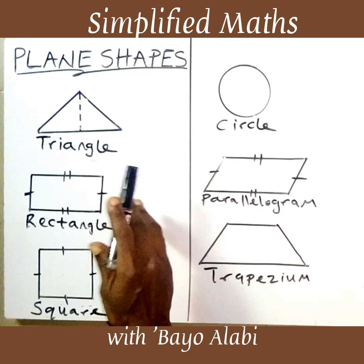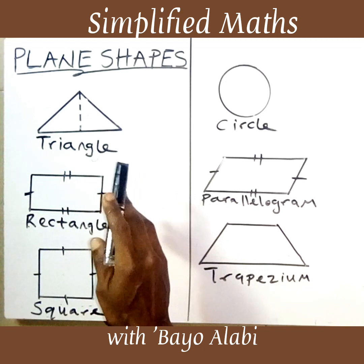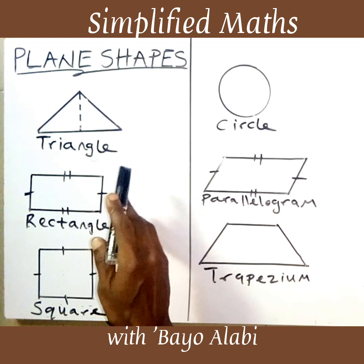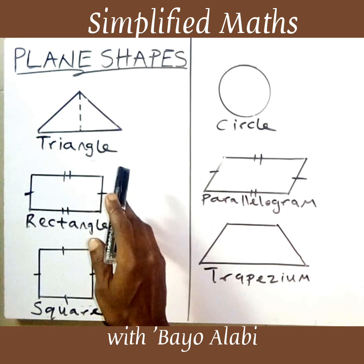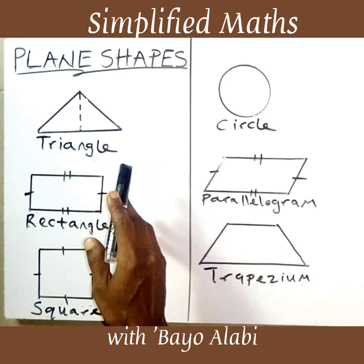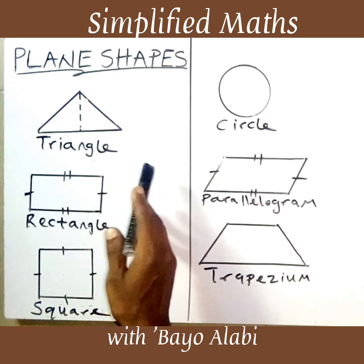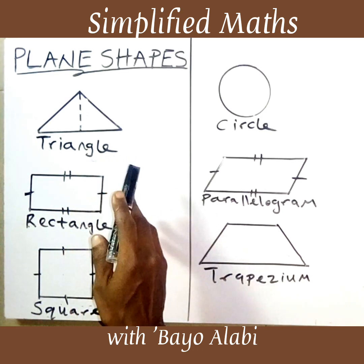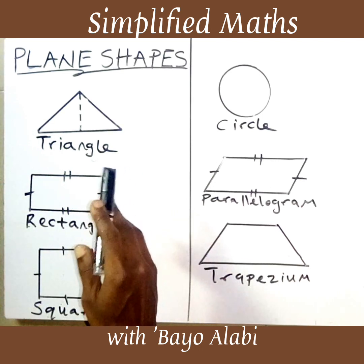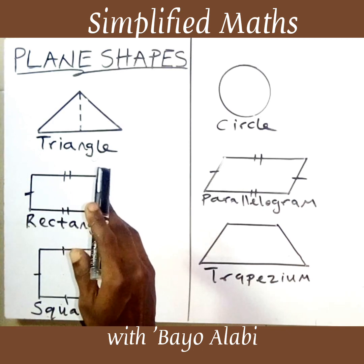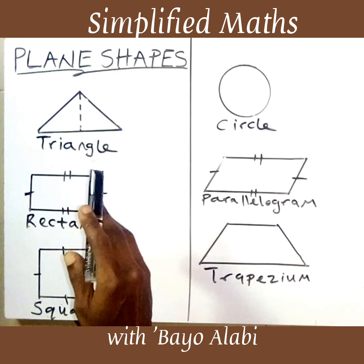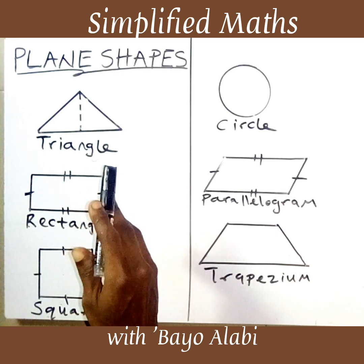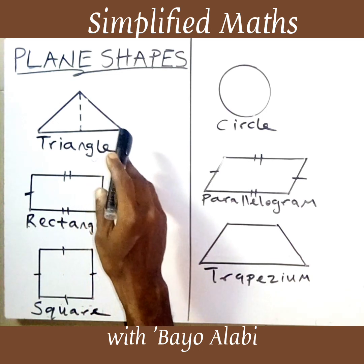Today I'm going to start with the introduction: what are plane shapes? Plane shapes are shapes that can be viewed from one side only. They only have one side. If you check around you in your sitting room or bedroom, there are objects that are only one-sided — any object you can view from one side is a plane shape.